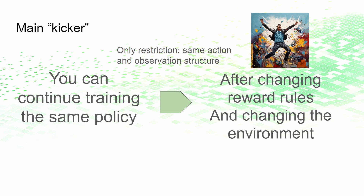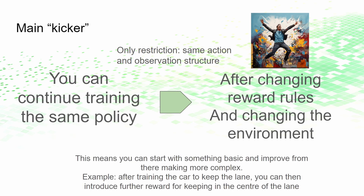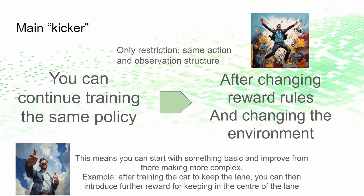For example, if you train the car to drive within the lane, later you can introduce new rewards for driving in the center of the lane. Most likely the car will initially be very jerky from left to right, but by introducing rewards for staying centered, the lane driving becomes a lot smoother. This feature of reinforcement learning allows you to improve and increase complexity as you go, saving you a lot of time — and that's why it's so cool.